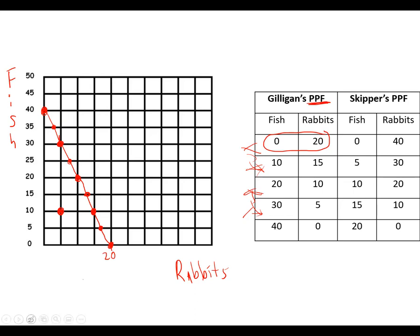Let's see what the Skipper can do. We'll do the Skipper in blue. Zero fish and 40 rabbits, so he's zero fish and 40. His next one is 5 fish and 30 rabbits, then 20 rabbits and 10 fish, then 15 fish and 10 rabbits, and finally 20 fish and zero rabbits. So here's the Skipper's. This is what's possible for him to produce. Any point along this blue line is possible for the Skipper.